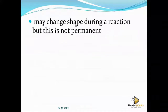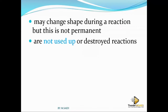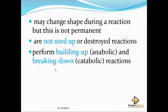An enzyme may change shape during a reaction, but this is not permanent. If the shape change is permanent, it cannot work again. When the reaction speeds things up in a building way, we call it anabolic. If it is breaking down compounds, we call it catabolic.